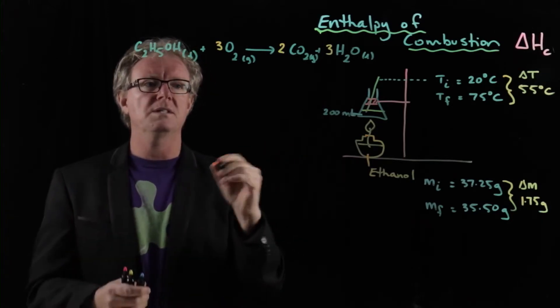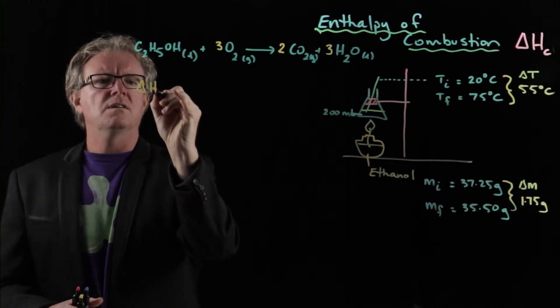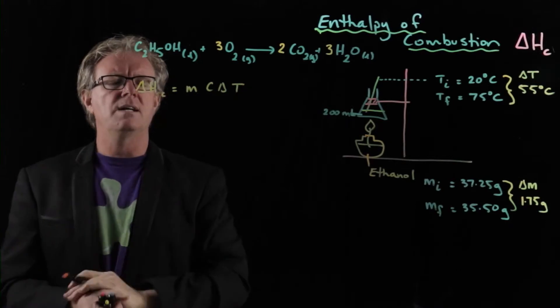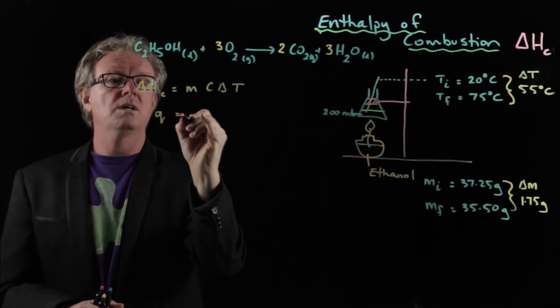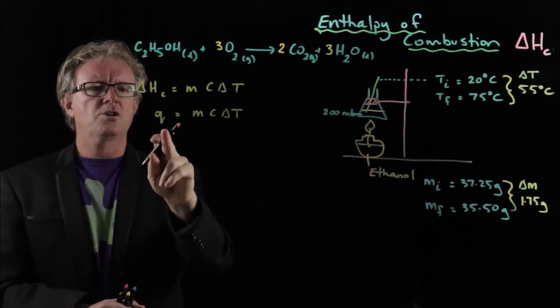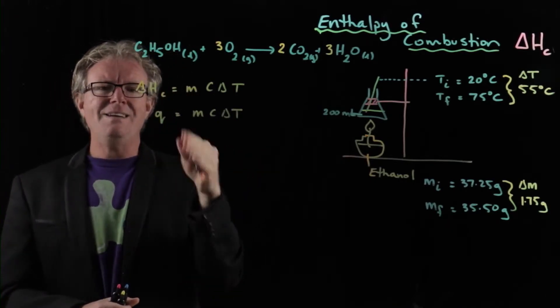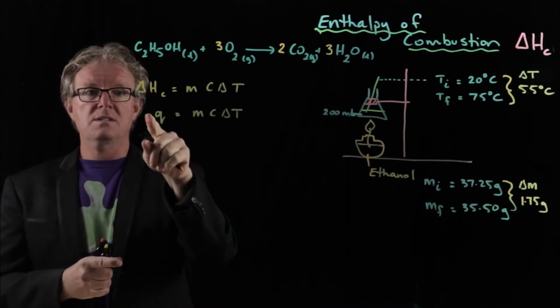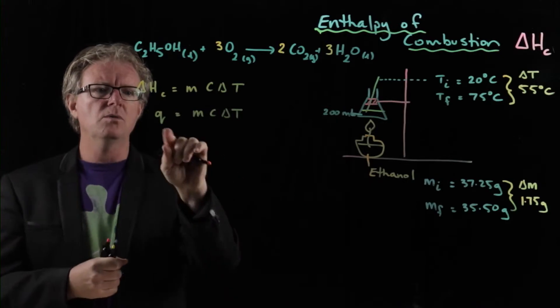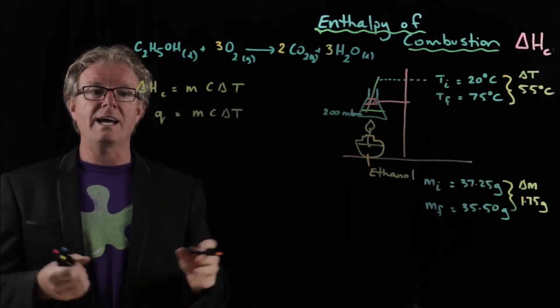And now we've got to work out the enthalpy of combustion. So we need to use some formulas here. The equation we're going to be using is delta Hc equals mcΔT. Then we've also got q equals mcΔT. So q is just the quantity of heat gained. And of course, if that is burning one mole, then it's the same as enthalpy of combustion. Here we're probably not going to have one mole, so we're going to use this equation to represent the heat lost or heat gained.